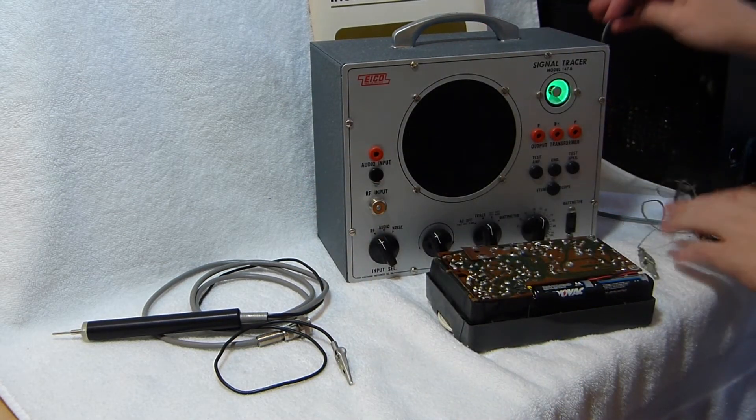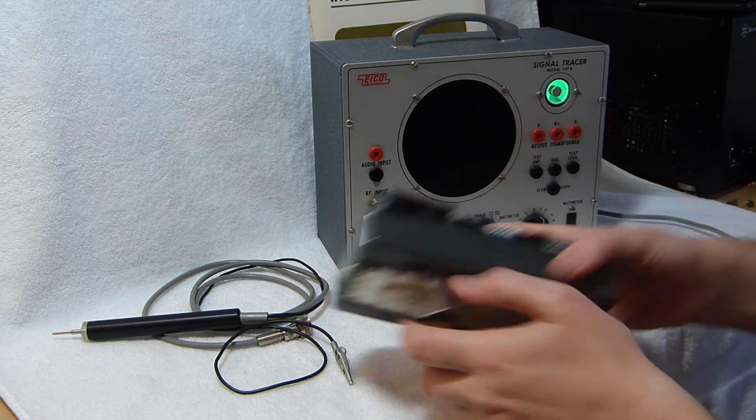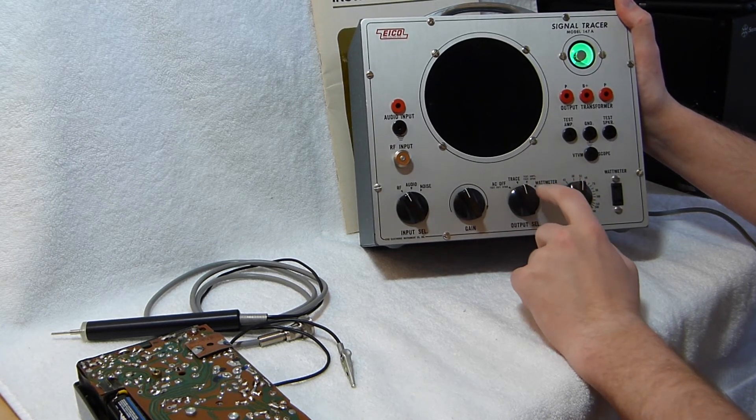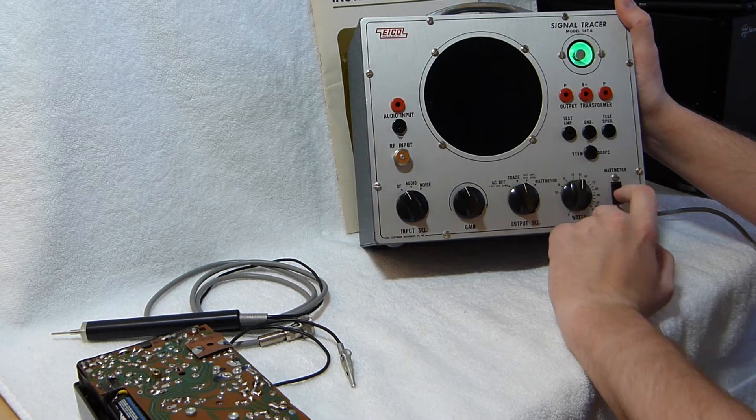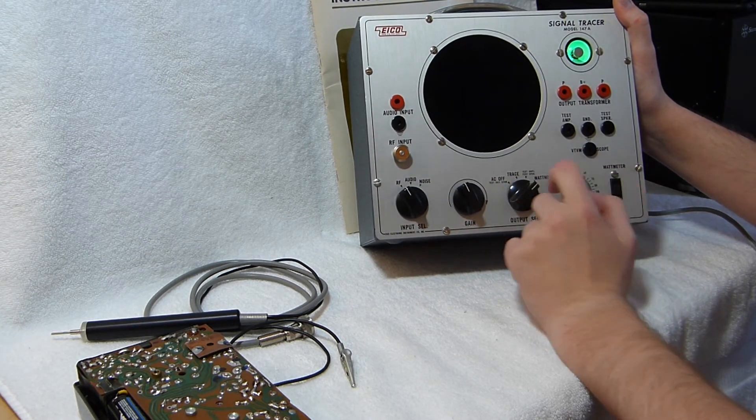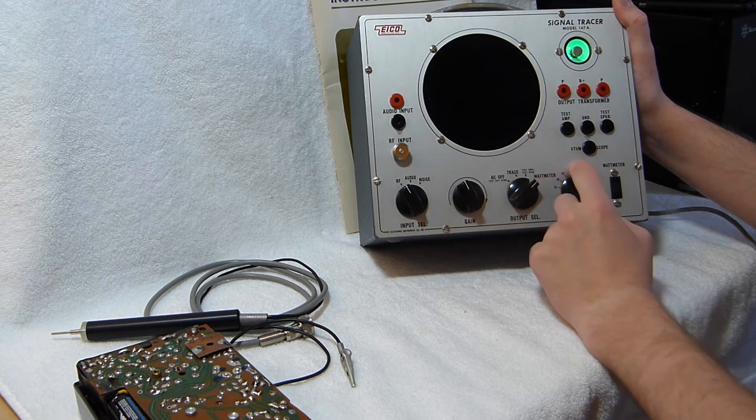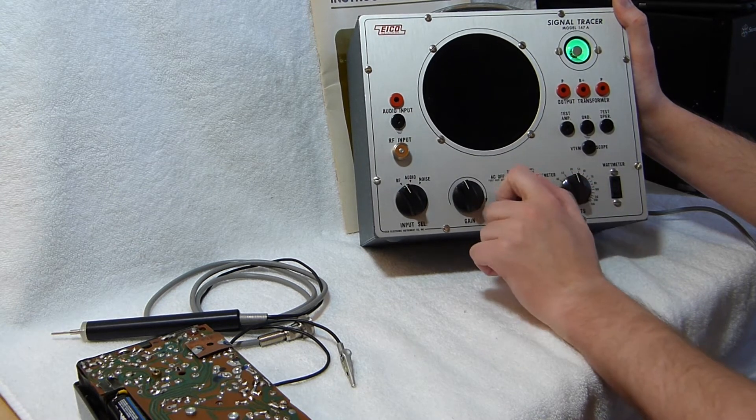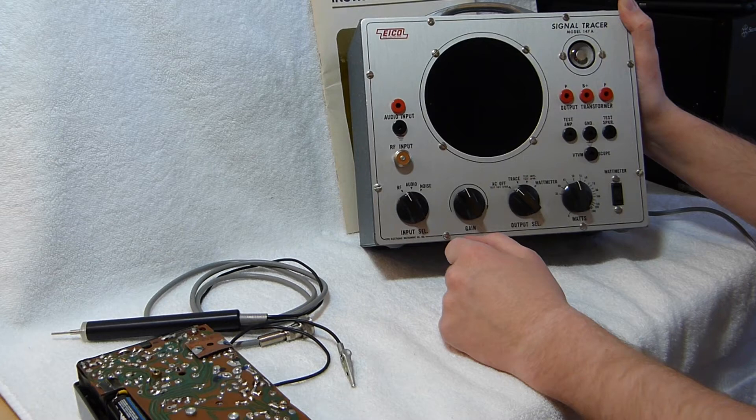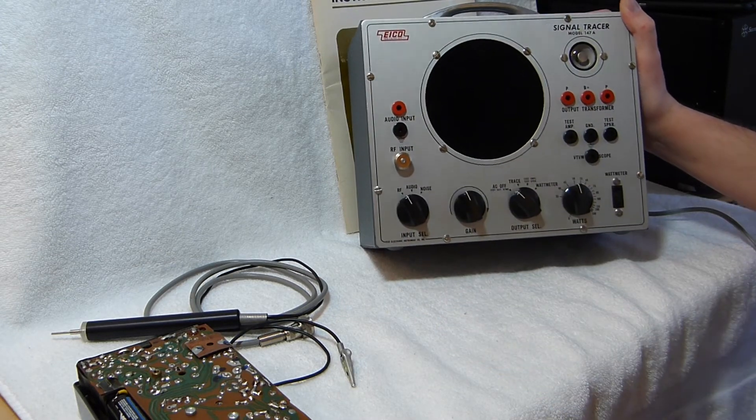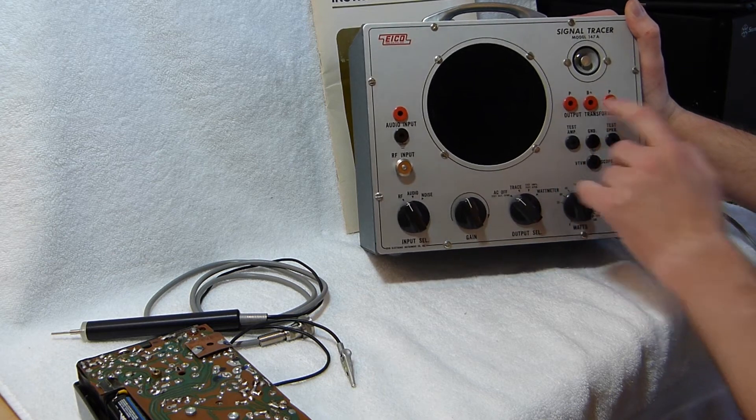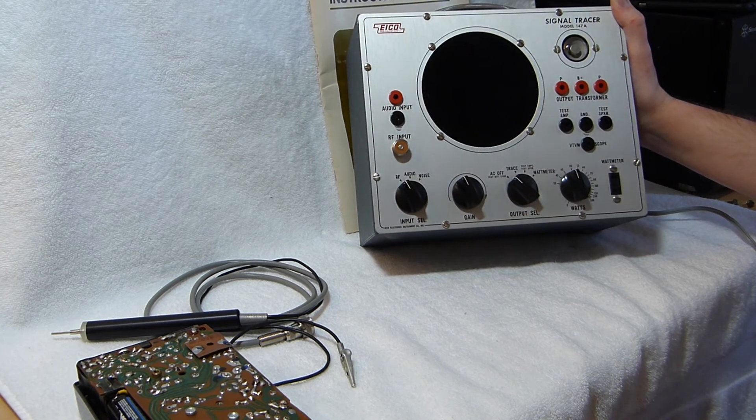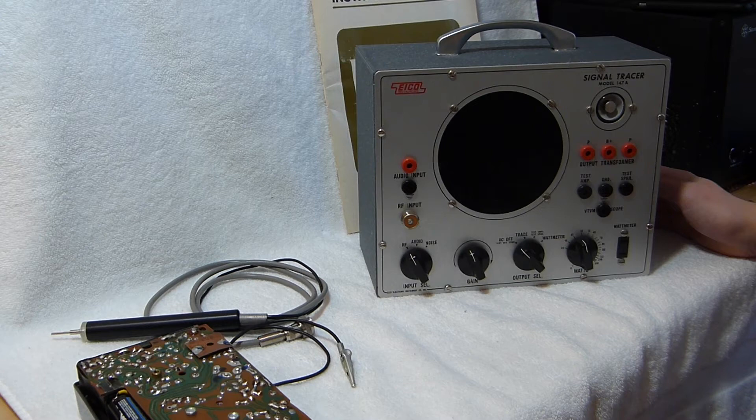In addition to the signal tracing features, it's also got an option to use this as a test amplifier or test speaker or a watt meter. Plug the device into that socket there. And then I believe adjust this for the eye to close. I'll have to check the manual. I haven't used that feature. You can also use this as a substitute output transformer. When this is on, there's B plus on that pin there, as it says. So you have to be careful with that. It's like 160 volts.